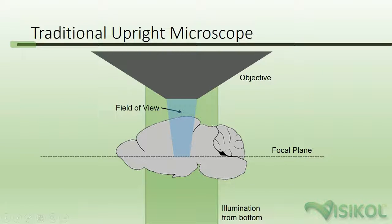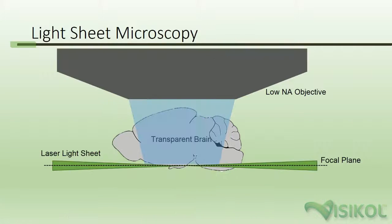To understand how light sheet microscopy works, it's important to understand why traditional microscopy does not work for imaging whole, cleared, and labeled tissues. If you were to take a cleared and fluorescently labeled mouse brain and place it on an upright microscope, the light source will excite the fluorophores throughout the entire depth of the tissue. This will result in a bright and blurry image where signal well outside of your objective's focal plane severely alters your image.